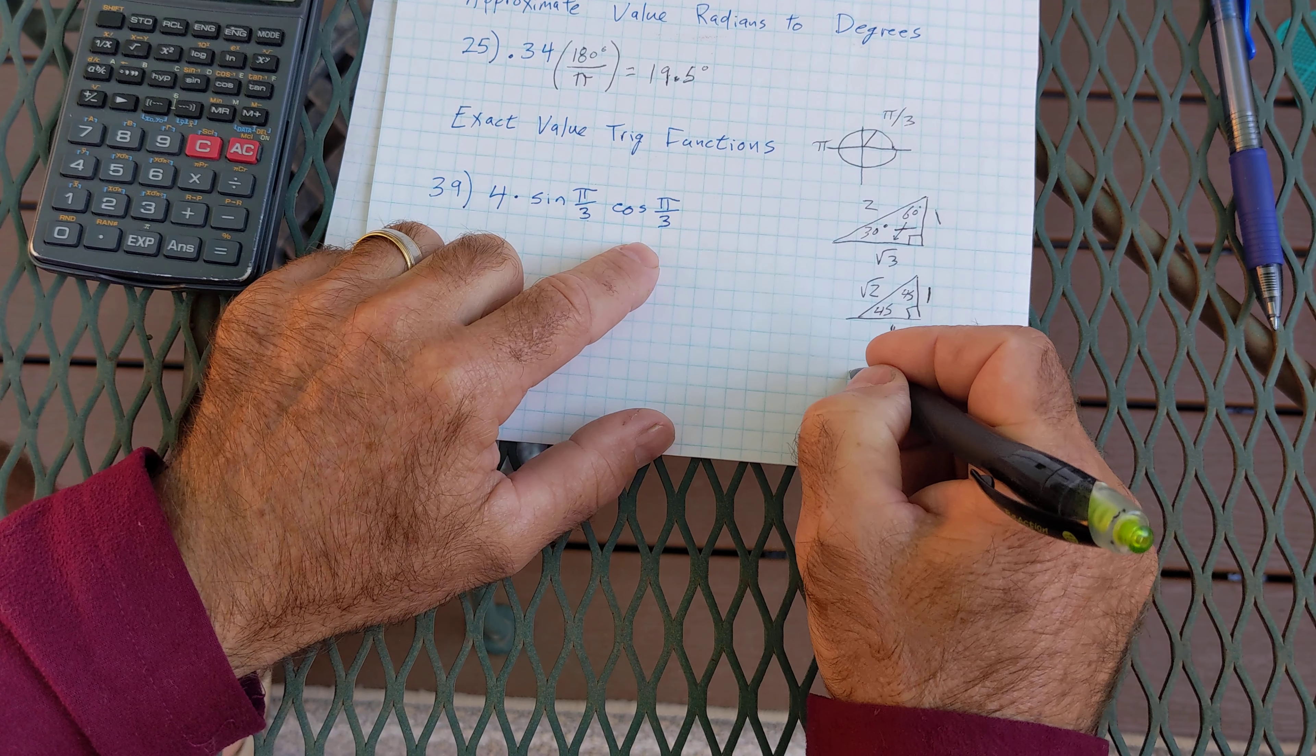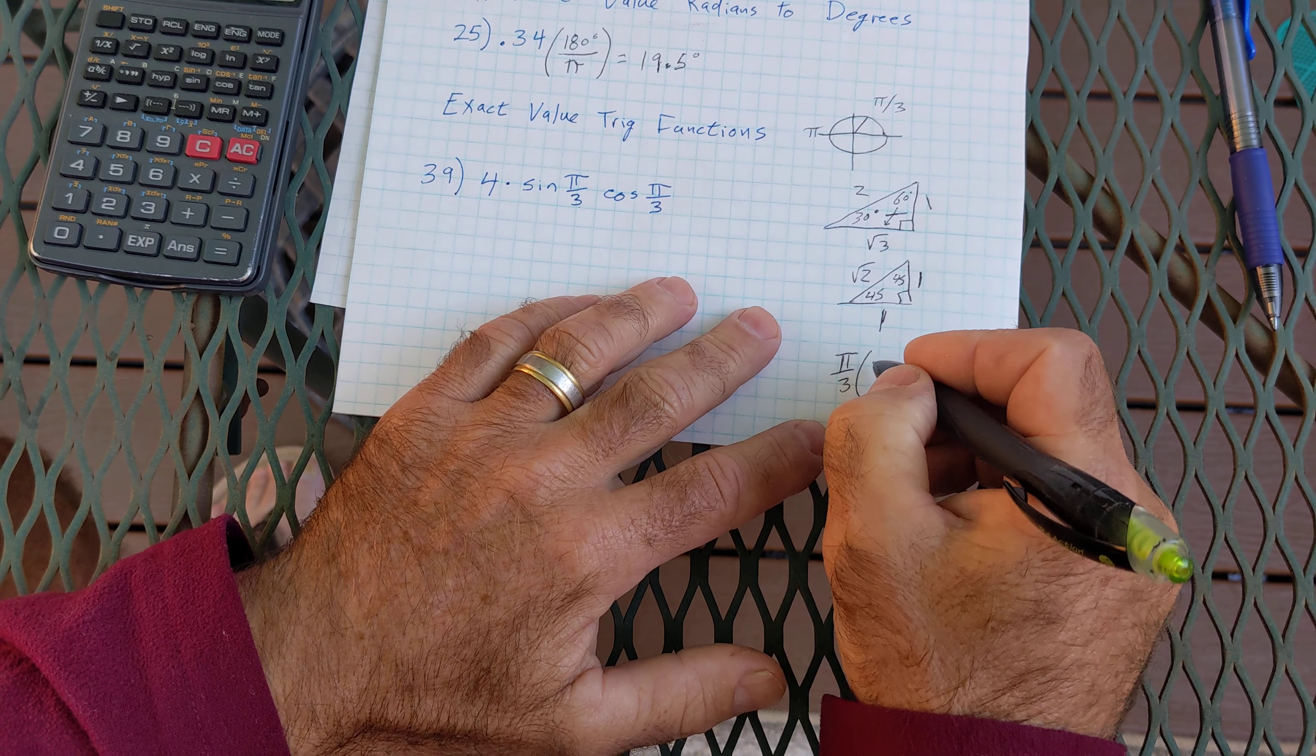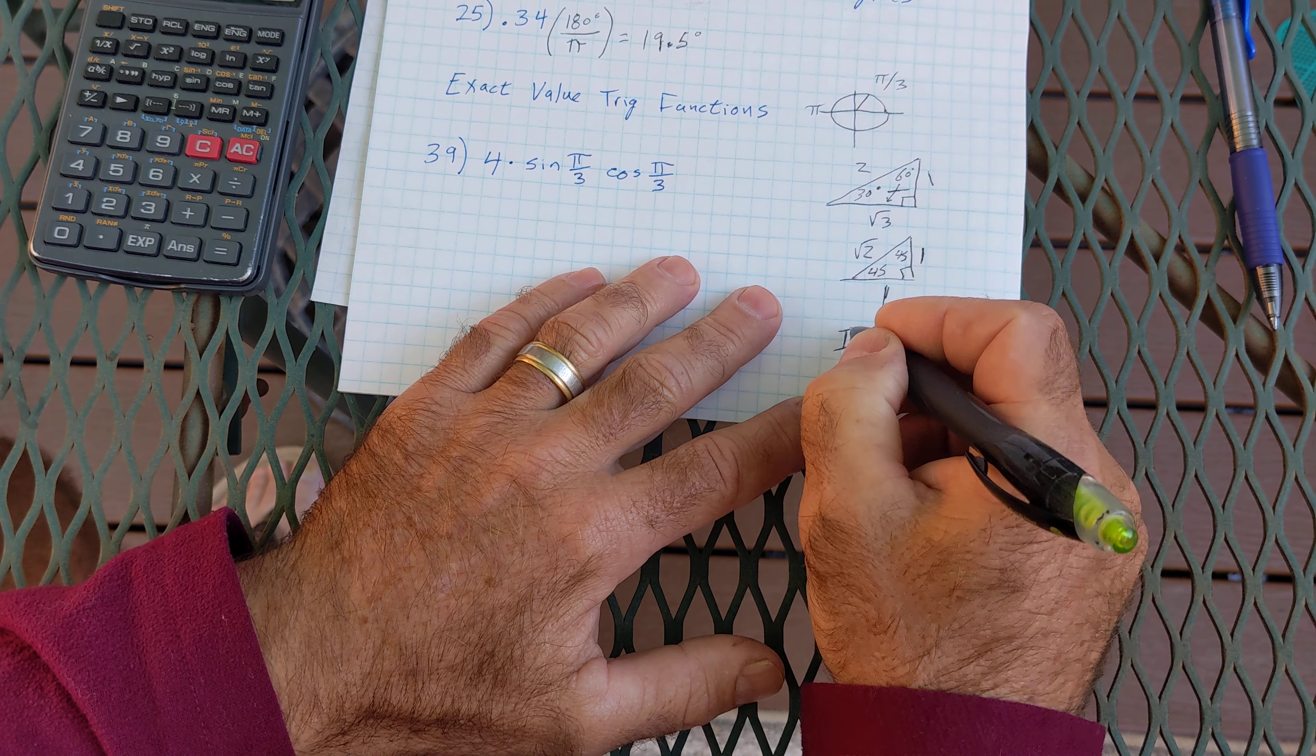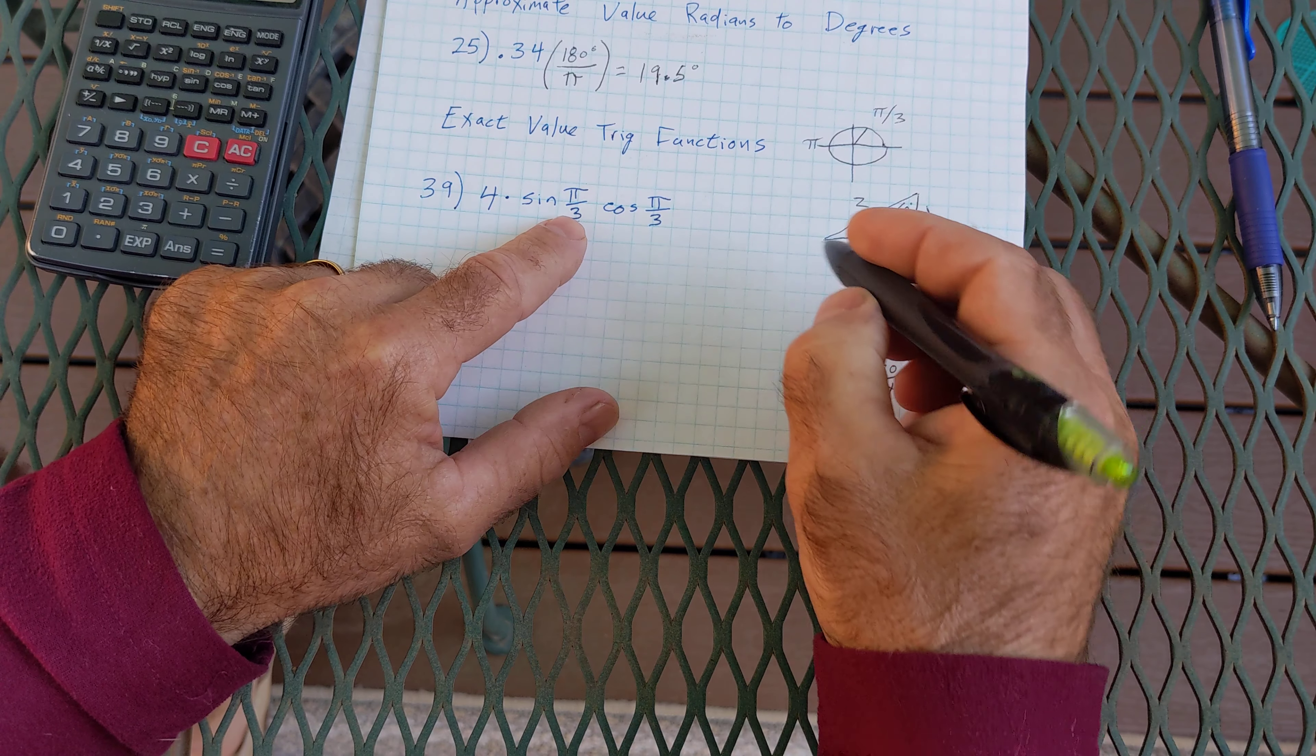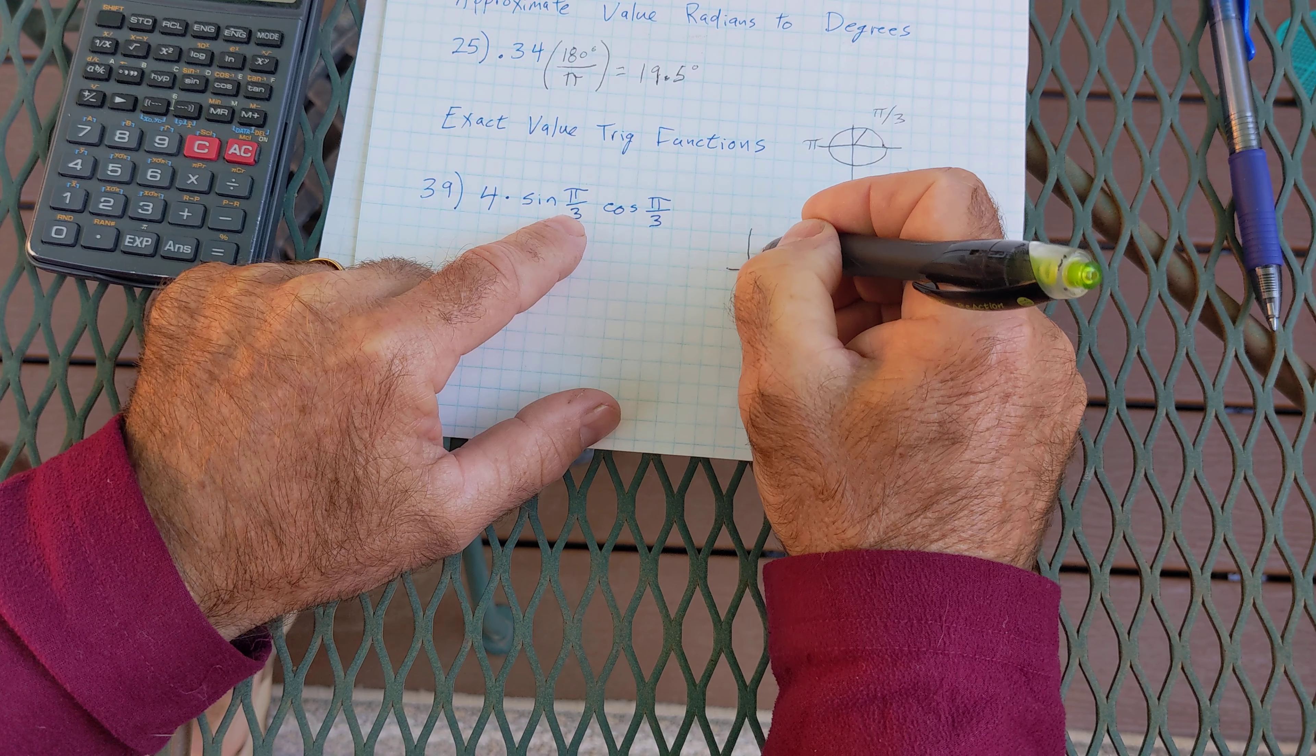So pi over 3, I could hopefully see that as 60, or I can multiply it by 180 over pi. Seeing my pi's cancel, 3 goes into 180, 60 times. So pi over 3 is a 60 reference angle. It is in the first quadrant right here at 60.